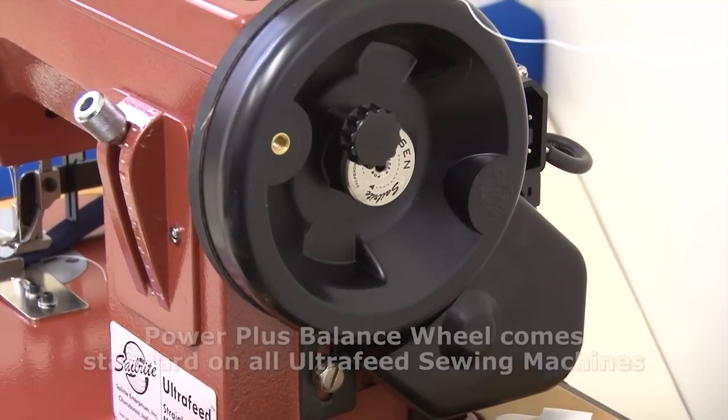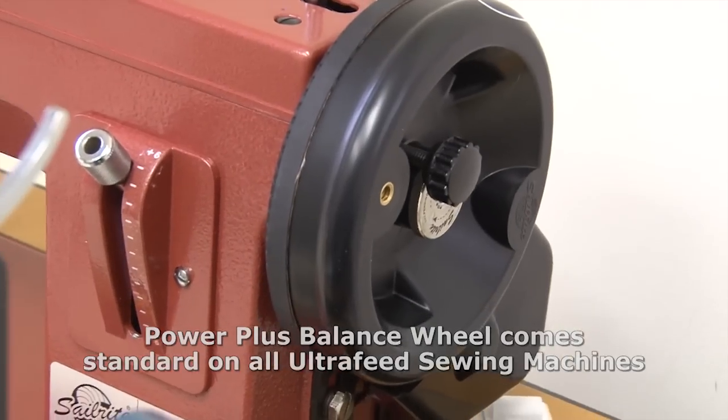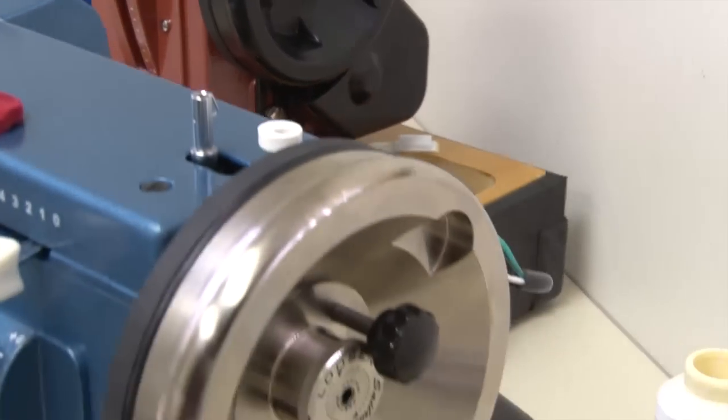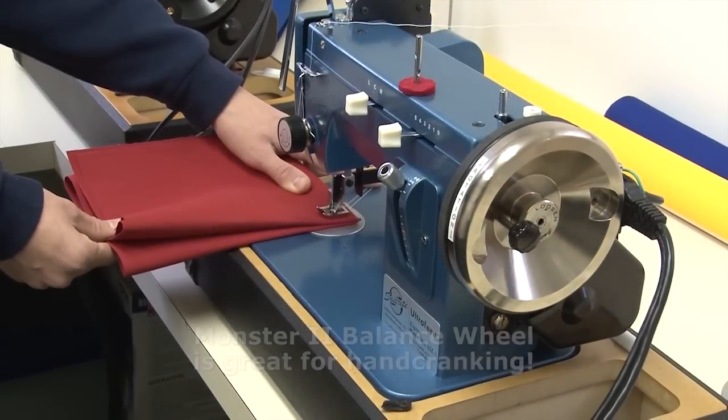The current Ultrafeed sewing machines come standard with the Power Plus balance wheel. It's not as heavy as the Monster 2 balance wheel so it doesn't do a good job of hand cranking. If you want to hand crank, you need to opt up to the Monster 2 balance wheel.